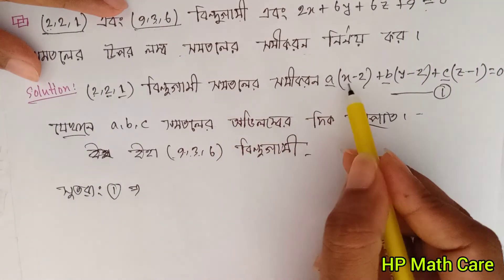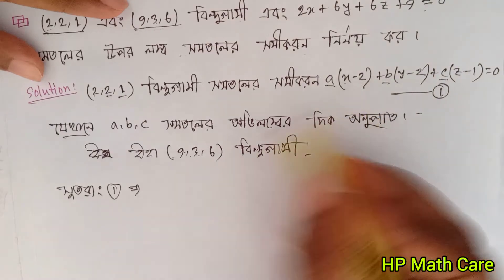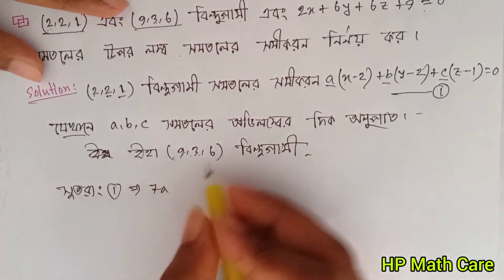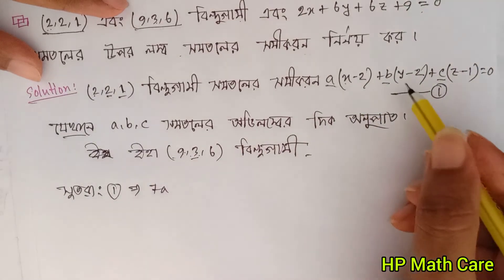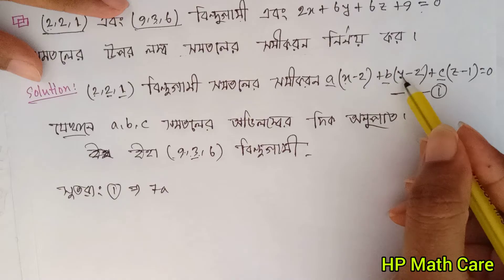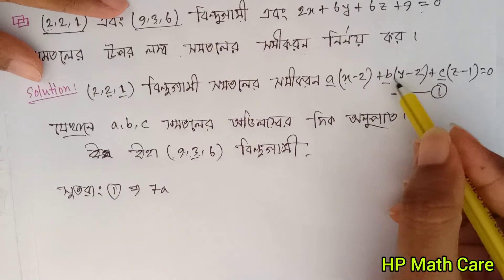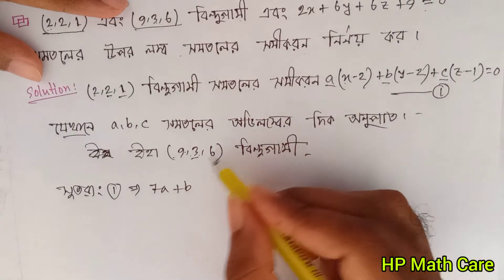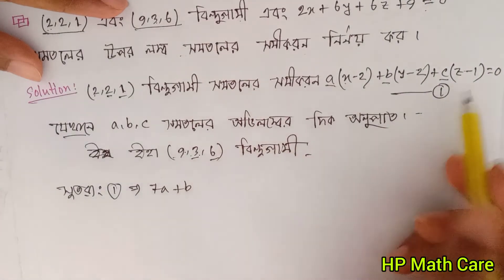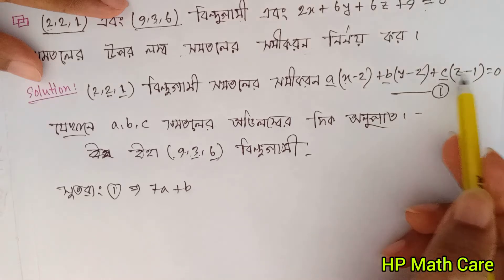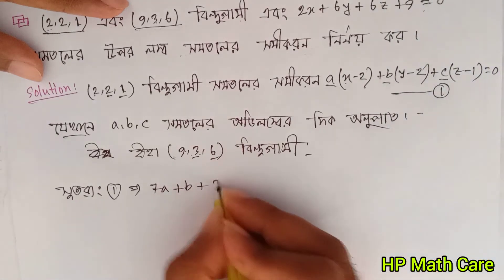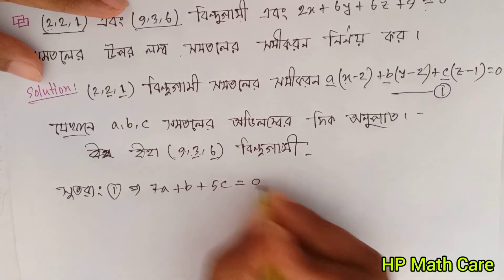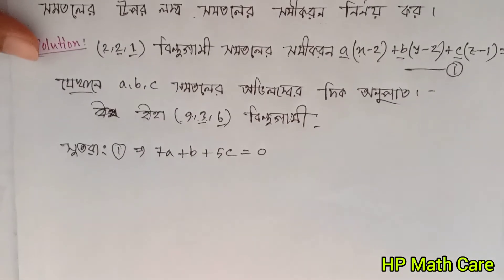Nine minus two is seven, seven to seven-eight. Treated three minus 2 is 1. That means plus b. That means 6 minus 1 is 5, plus 5c equals 0. Do you see that?